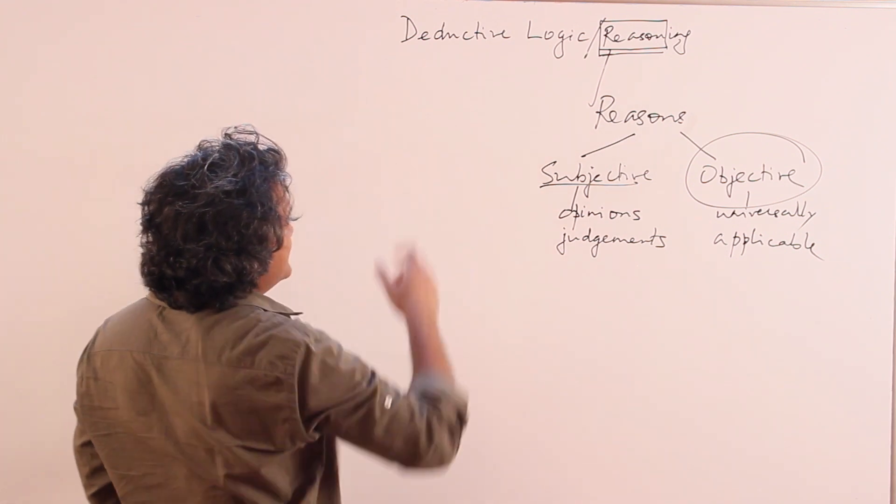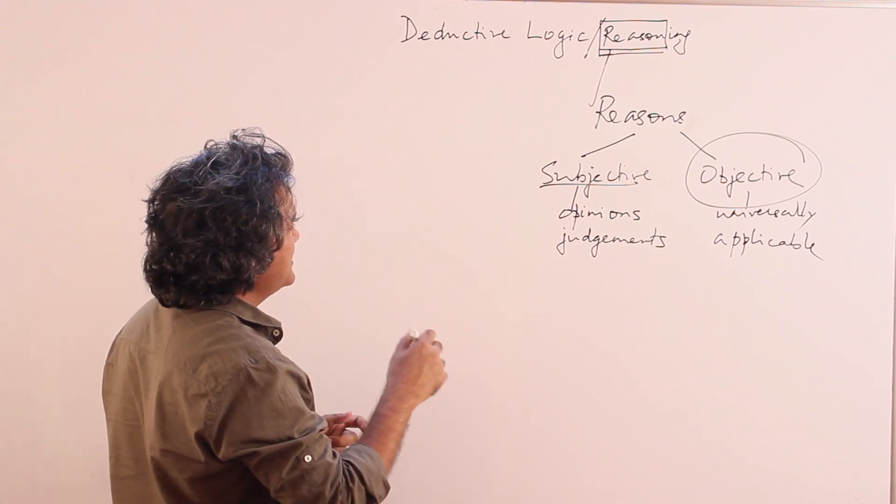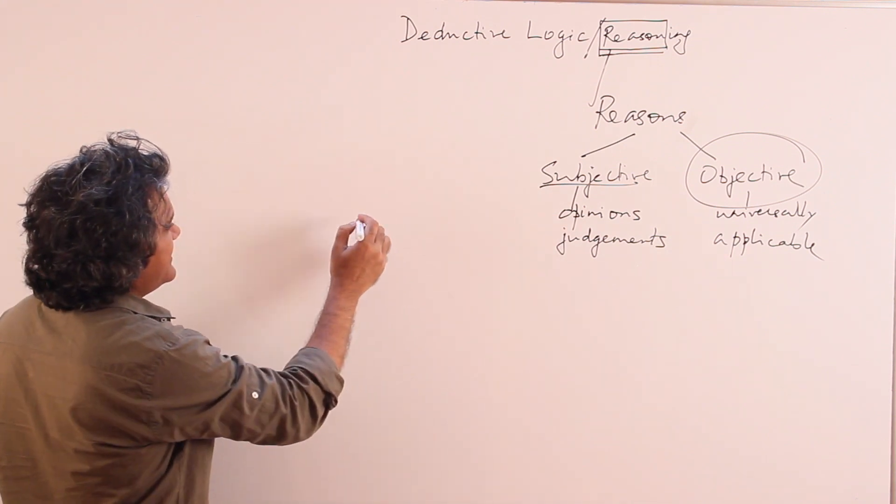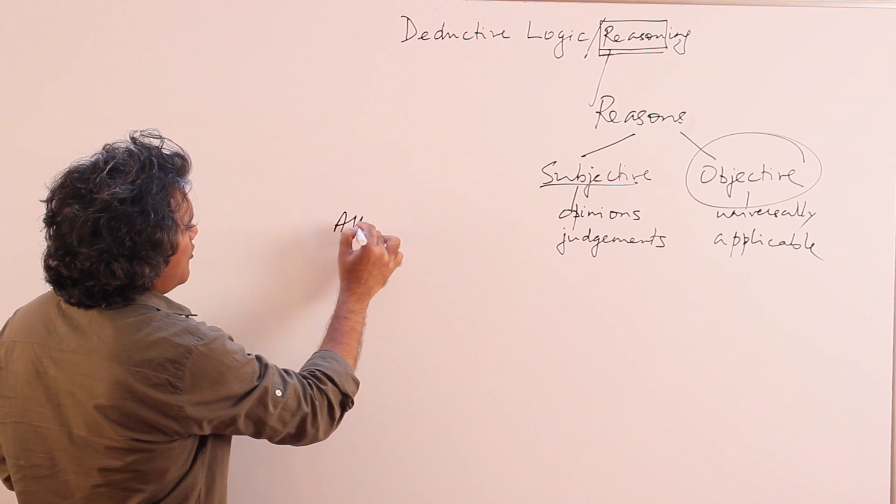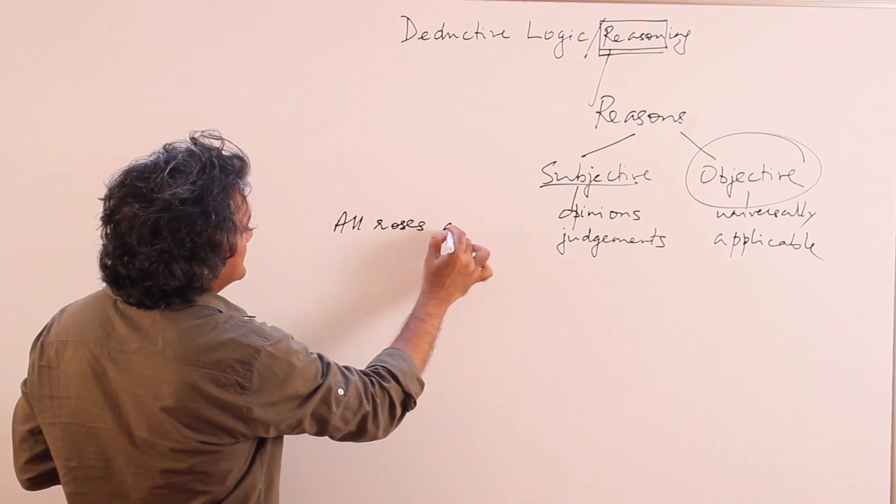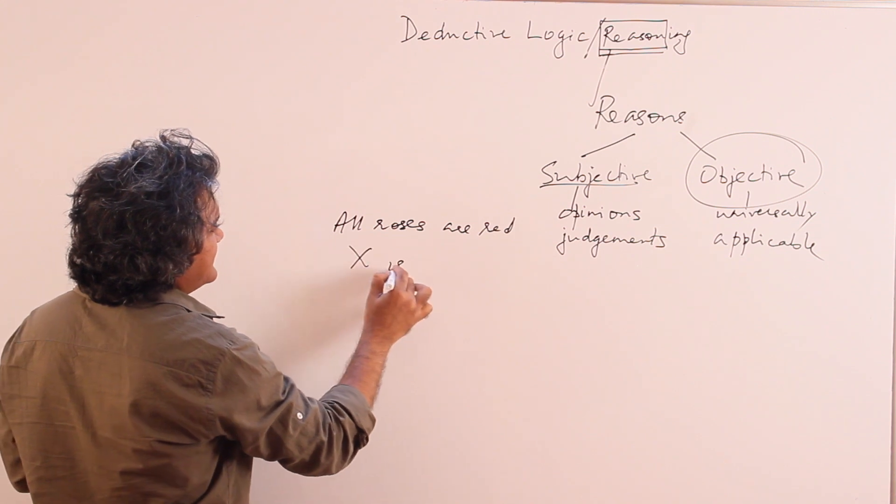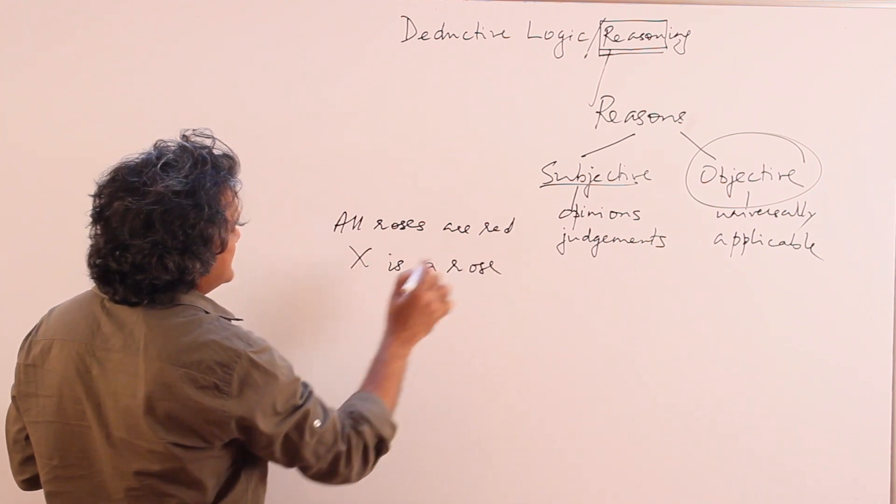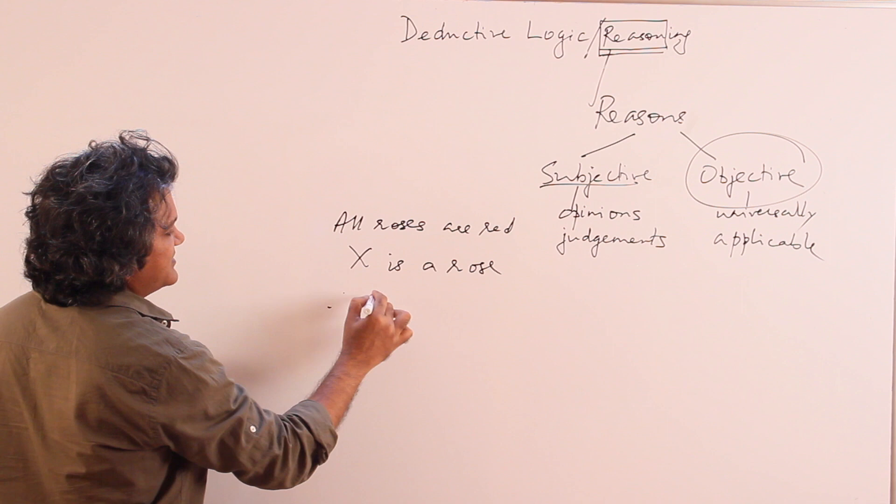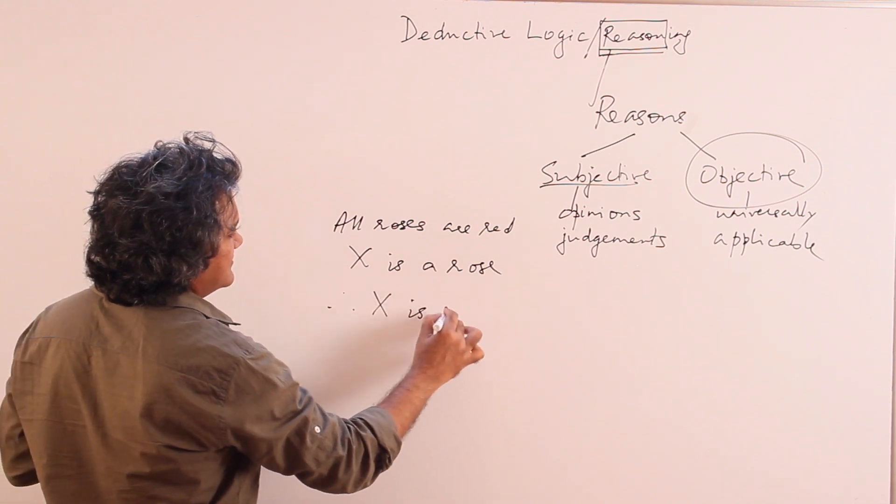Now deductive - to explain this let me give you an example. Suppose I say that all roses are red, and then I say X is a rose, and then obviously therefore X is red.